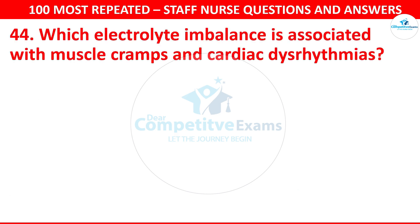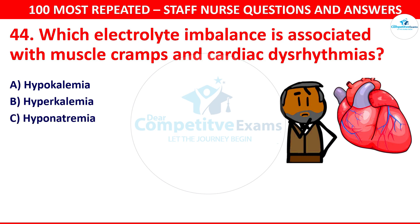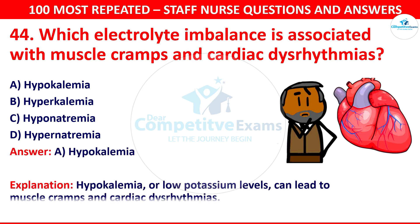Question number 44: Which electrolyte imbalance is associated with muscle cramps and cardiac dysrhythmias? Options are hypokalemia, hyperkalemia, or hyponatremia. The correct answer is hypokalemia. Hypokalemia, or low potassium levels, can lead to muscle cramps and cardiac dysrhythmias.